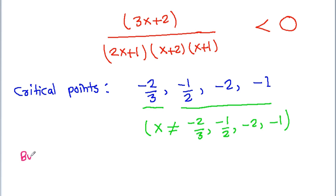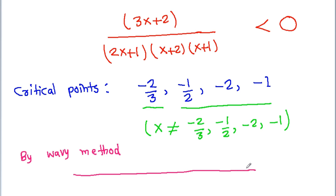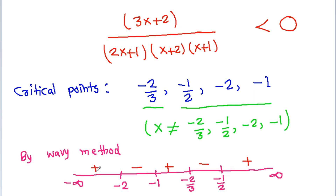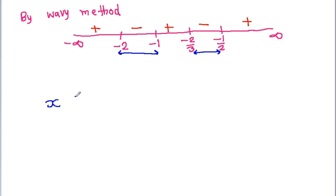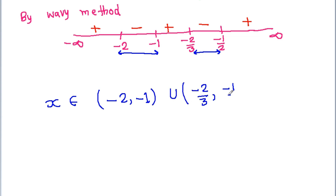By the wavy curve method, placing the critical points on the number line, the sign alternates: positive, negative, positive, negative, positive. Since we need the expression to be less than 0, we pick the negative intervals. Therefore x belongs to (−2, −1) ∪ (−2/3, −1/2).